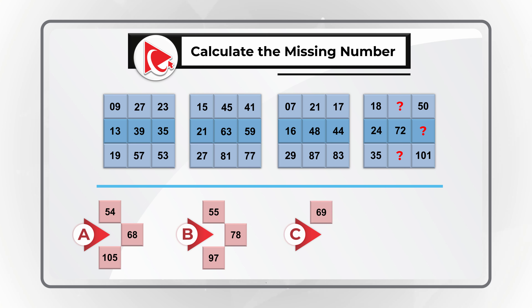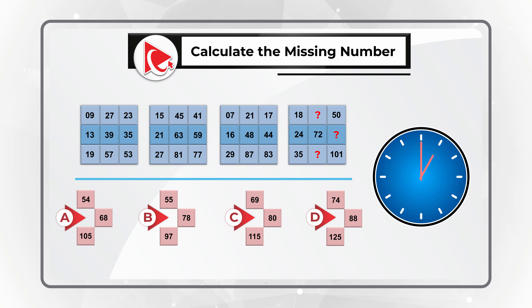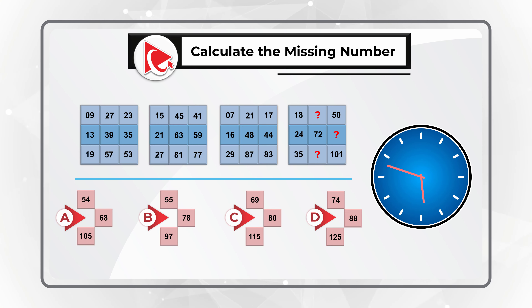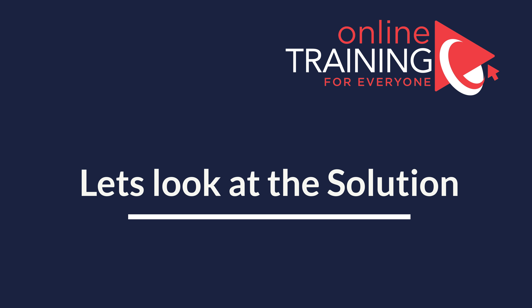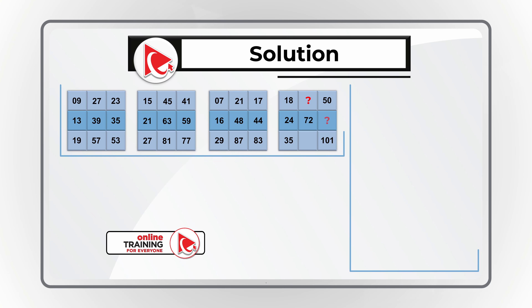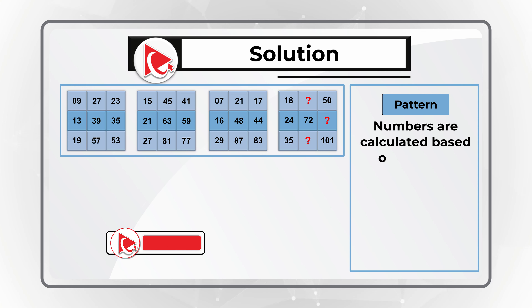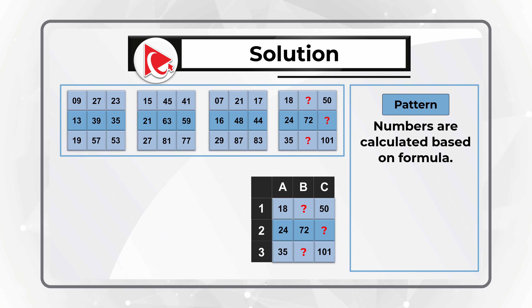Here is an amazing question testing your analytical skills. You're presented with four sets of 3×3 matrices, each with nine numbers. In matrix four, three numbers are missing. Choices: A) 54, 68, and 105; B) 55, 78, and 97; C) 69, 80, and 115; D) 74, 88, and 125. Give yourself 20 to 30 seconds, pausing if needed, to come up with the solution.